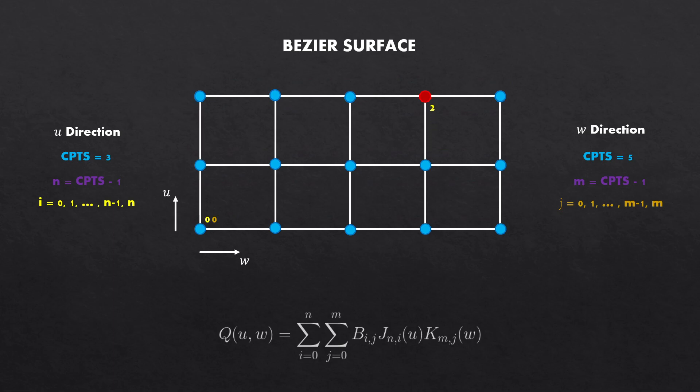The i will be equal to 2. Now the columns. So from the left 0, 1, 2, 3. j will be equal to 3. The index of this point is 2, 3. Okay, enough of this.